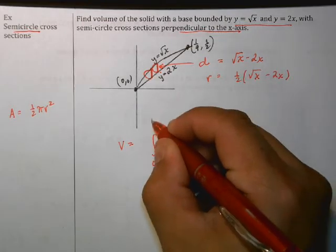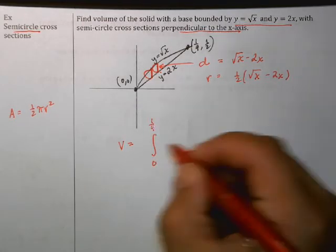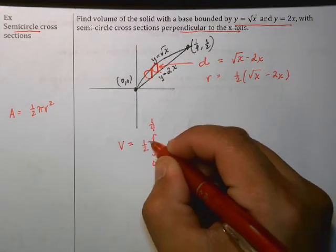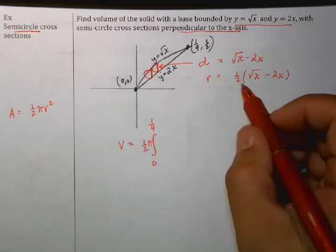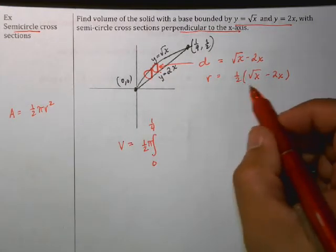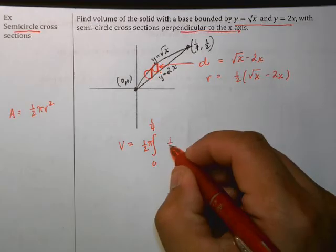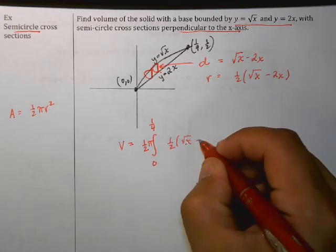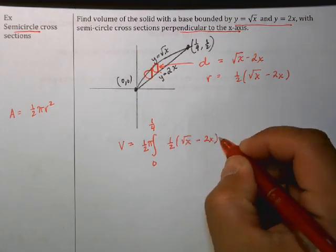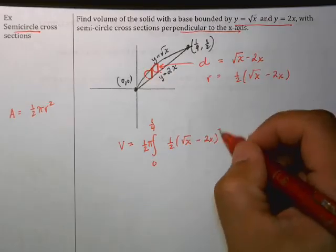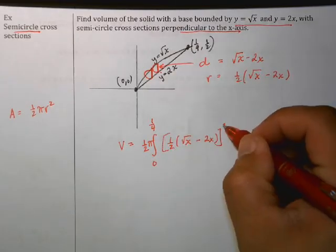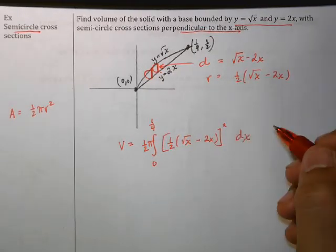So then the volume is the integral between zero and one-fourth of one-half pi r squared. But r is really equal to this whole thing, so it's one-half times the square root of x minus 2x, that whole thing squared, integrated in the x direction.